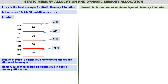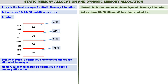Now let us go to dynamic memory allocation. Linked list is the best example for dynamic memory allocation. Let us store 10, 20, 30, and 40 in a single linked list. I will consider some chunks of memory at different parts of the memory.